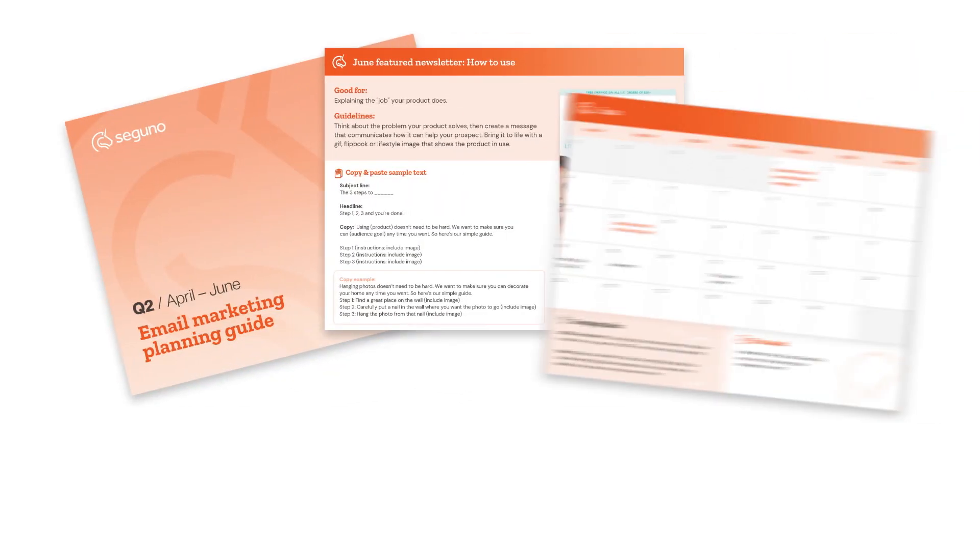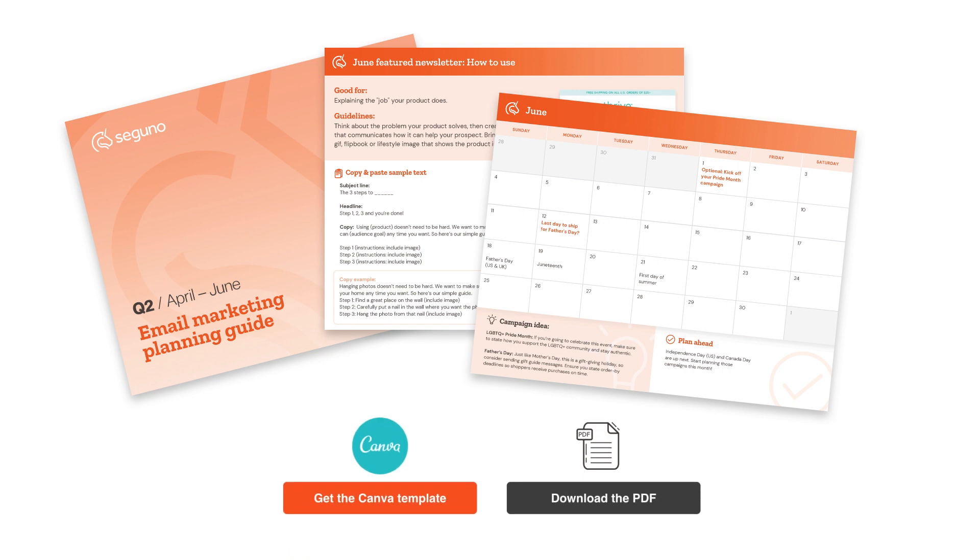All quarterly planning guides are available as a PDF or Canva template. We recommend using Canva for customization flexibility, but as always choose the option that works best for you and your business. Let's go ahead and jump into the guide.